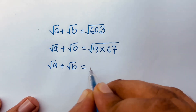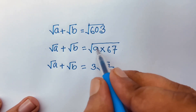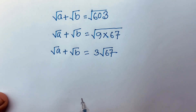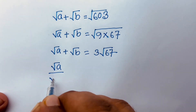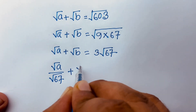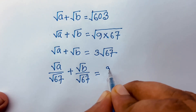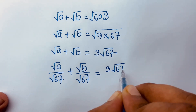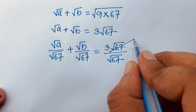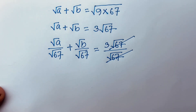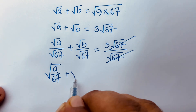So square root a plus square root b is equal to 3 square root 67, because square root of 9 is 3. I divide both sides by square root 67, so I can say: square root a over square root 67 plus square root b over square root 67 equals 3 square root 67 over square root 67. The square root 67 terms cancel.